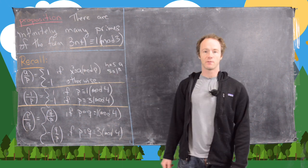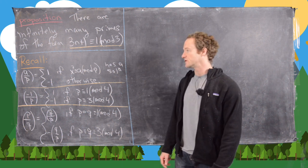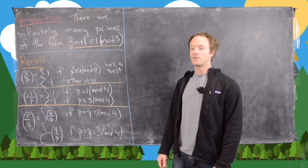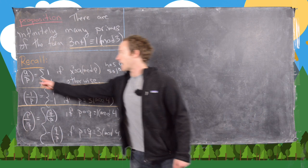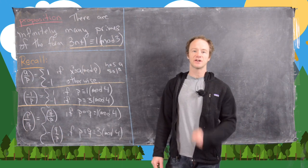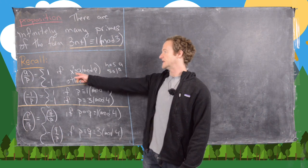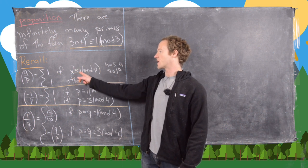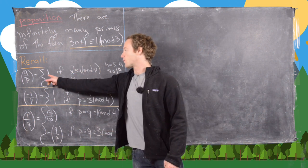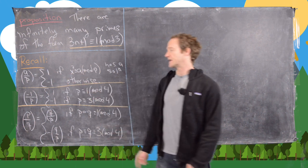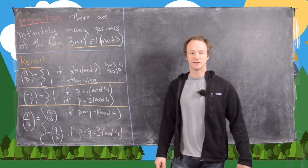We're going to have a couple of important tools. One is the notion of a quadratic residue in the form of the Legendre symbol. So a by p is like a question: are you a quadratic residue? In other words, is there a solution to x squared congruent to a mod p? The output is 1 if the answer is yes, and negative 1 if the answer is no.